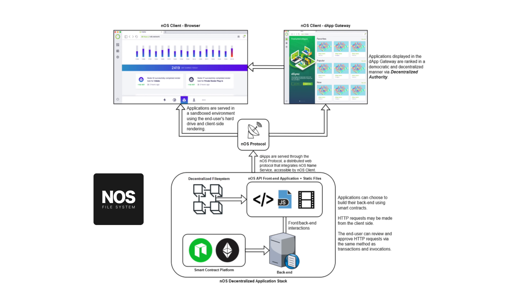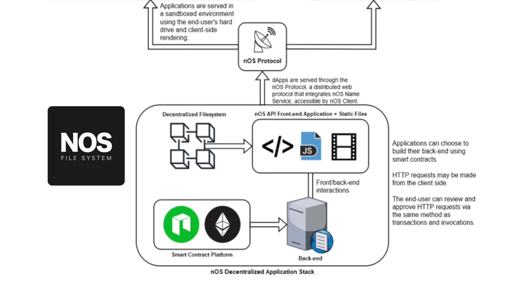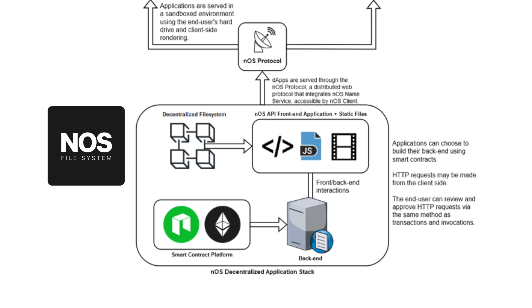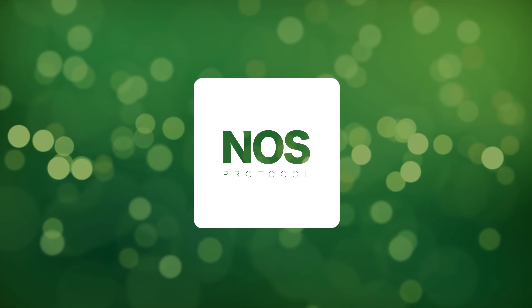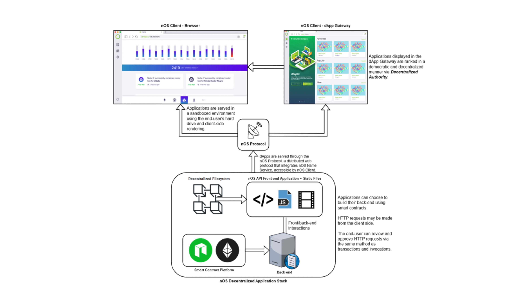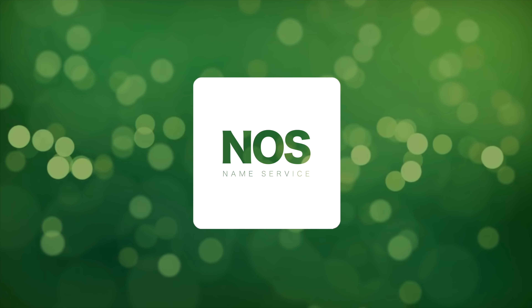This allows nOS to serve both back-end logic and front-end material in an open source and truly transparent manner. nOS can be considered a full stack solution for dApp development, deployment, discovery, and interaction. Smart contracts build the back end of dApps; the nOS file system is the peer-to-peer protocol that allows content to be distributed in a decentralized manner. The nOS APIs support building from smart contracts of both NEO and Ethereum, and front-end materials are pulled from the nOS file system.